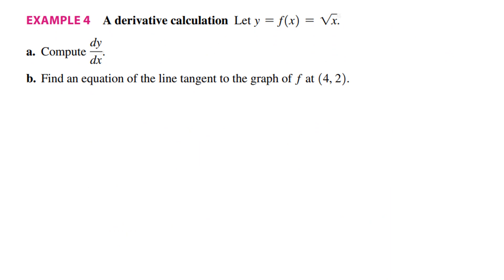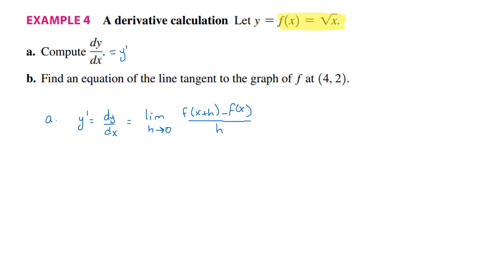In this example, f of x equals the square root of x. Let's find dy by dx. dy by dx is another notation for y prime, which is equal to the limit as h goes to 0 of f of x plus h minus f of x divided by h. That gives us the limit as h goes to 0 of square root of x plus h minus square root of x, divided by h.